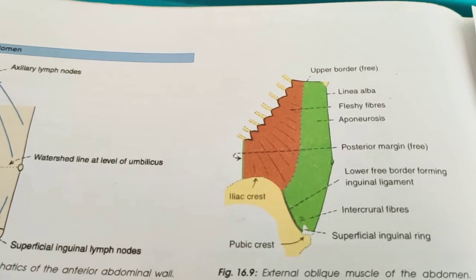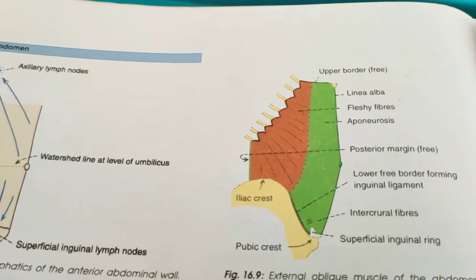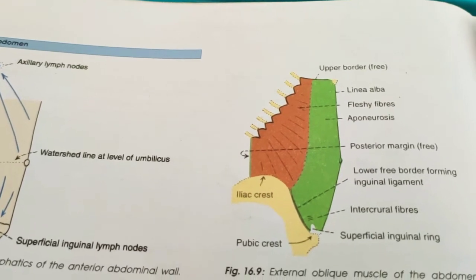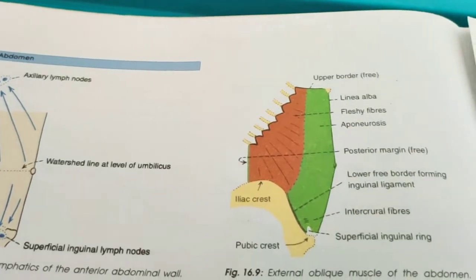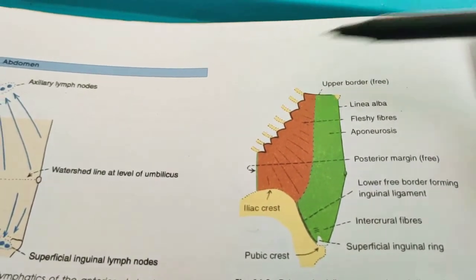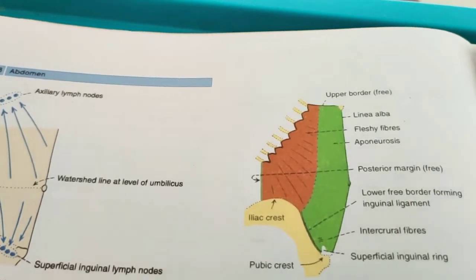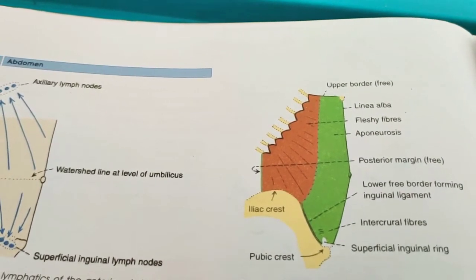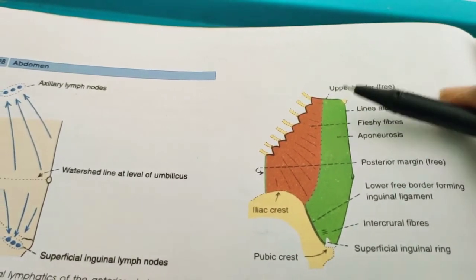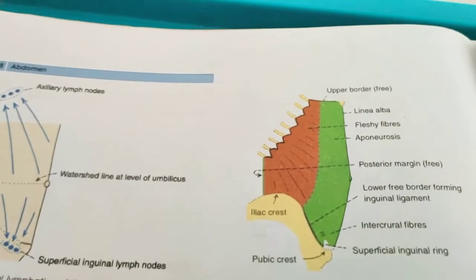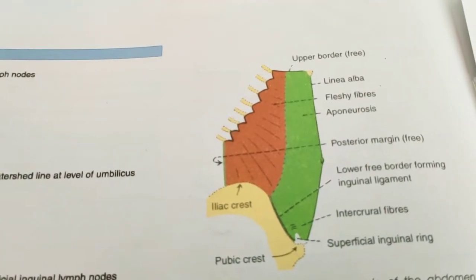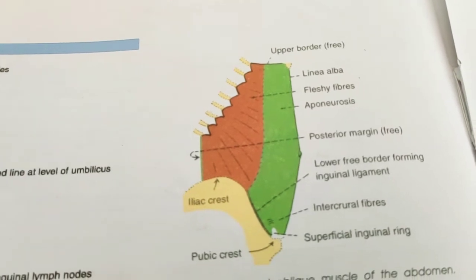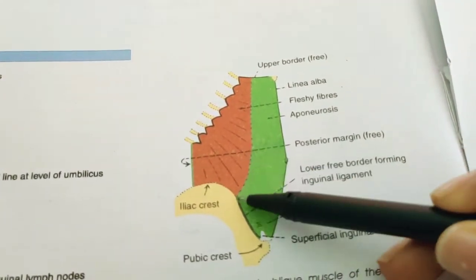Some other points: the upper four slips of origin of the muscle interdigitate with those of serratus anterior, and the lower four slips interdigitate with latissimus dorsi. The junction of the muscle fibers with the aponeurosis lies medial to a vertical line drawn from the ninth costal cartilage, and below a line joining the anterior superior iliac spine to the umbilicus. Above the ninth costal cartilage, the line curves upwards and medially.